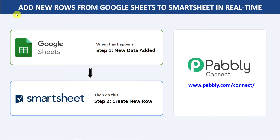Hello everyone. In this video we will learn how to add new rows from Google Sheets to Smartsheet in real time. The idea is that when a new data row is added in Google Sheet, automatically the same data row will appear in Smartsheet. But there is no direct connection between Google Sheets and Smartsheet, so we will be using an integration and automation software called Pably Connect — no coding skills or programming knowledge required. Let me show you with an example.